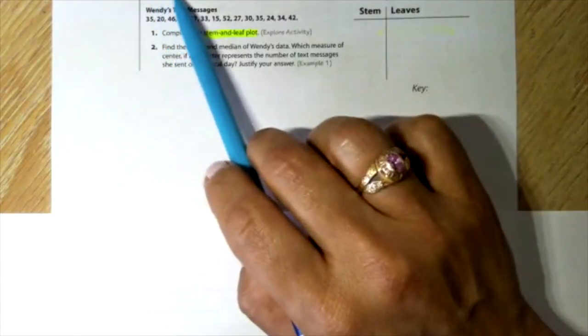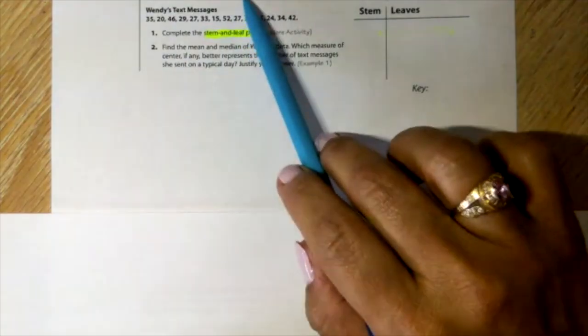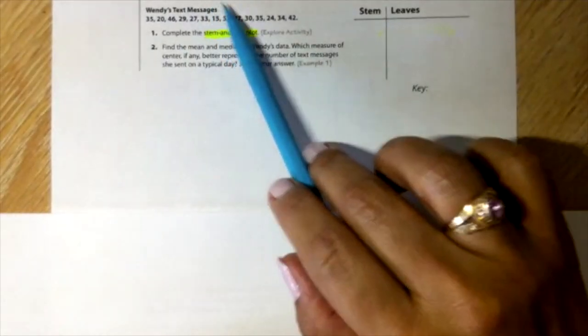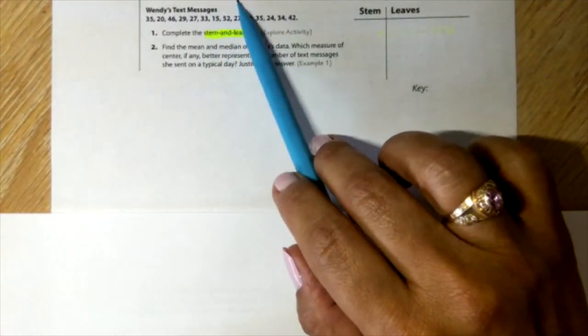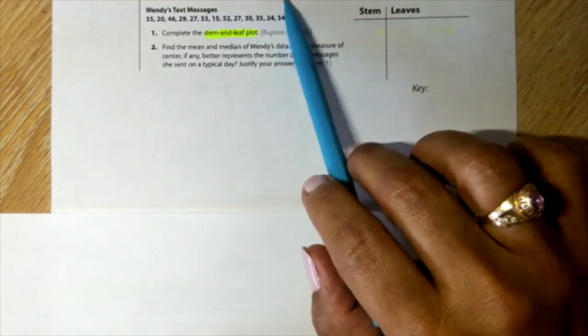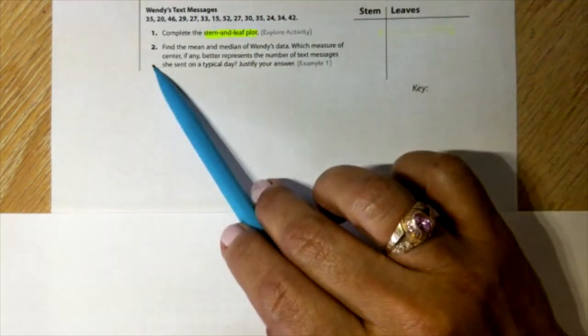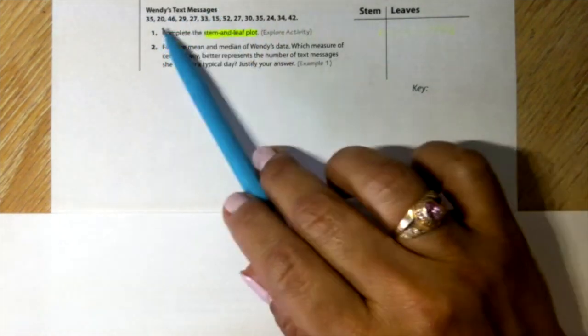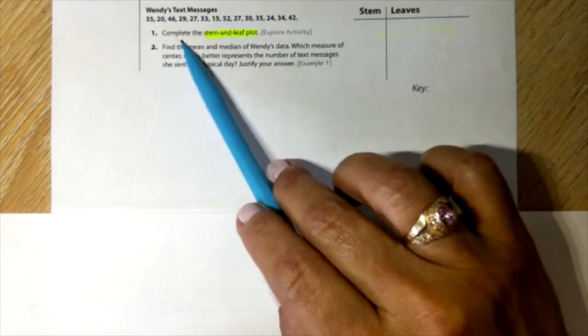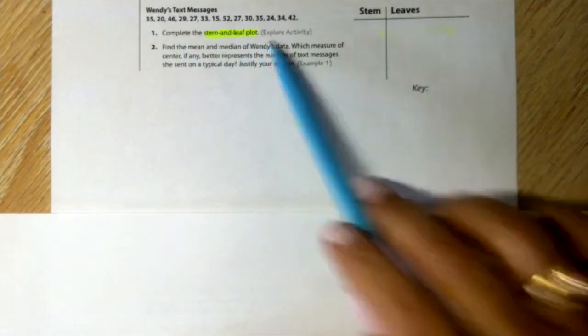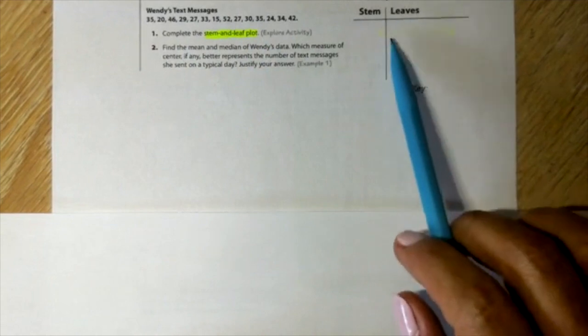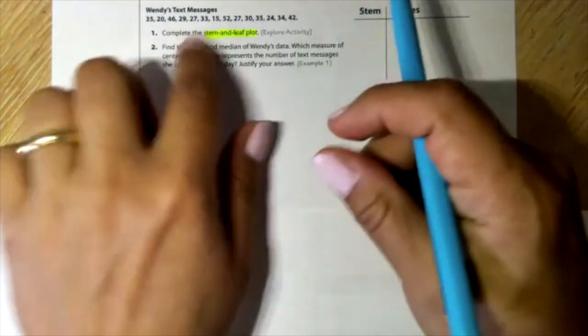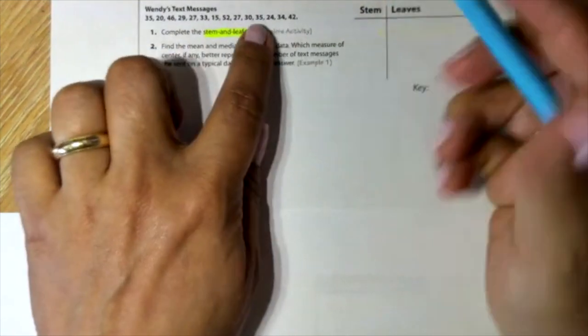Wendy kept track of the number of text messages she sent each day for two weeks. Question one, complete the stem and leaf plot. Here we have it, the stem and leaf. So what we're going to do is start by looking at the data and determine where do we need to start.